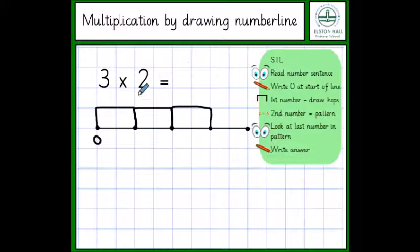The second number tells us what pattern we're counting in. So we now know we're doing our 2 times table. So we can write 2, 4, 6. And we stop at our last hop. Then we look at the last number in our pattern, which was 6. And that is our answer, which we write by the equal sign.